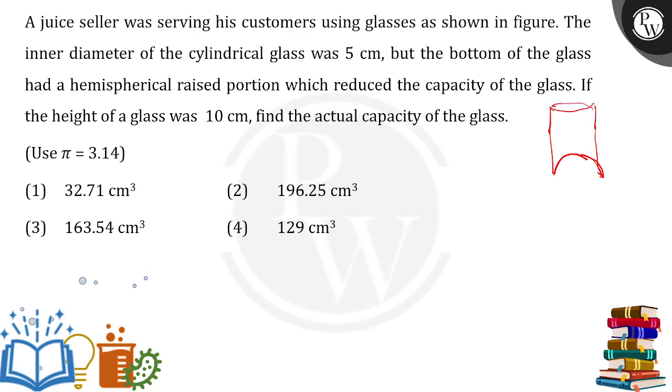The height of the glass is 10 cm. They are asking for the actual capacity. First thing first, we have to calculate the volume of the cylinder. Volume of cylinder will be πr²h. We have the values for the radius we can calculate since the diameter was given.